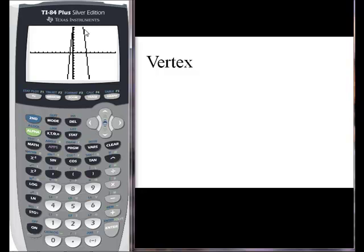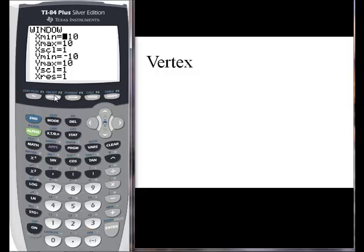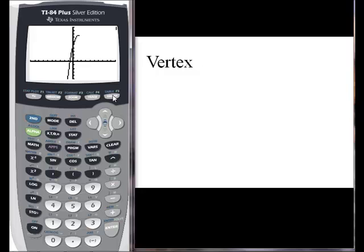Now the vertex is the turning point where this thing turns around. Right now I don't see the vertex, so I want to move my window up a little bit so that I do, and I'm going to go to my y max. Let's change it to 20, and let's re-graph. And there is our vertex.